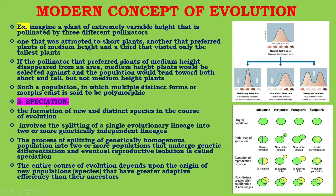The third feature of the modern concept is speciation — the formation of new and distinct species in the course of evolution. Speciation involves the splitting of a single evolutionary lineage into two or more genetically independent lineages. The process of splitting of a genetically homogeneous population into two or more populations that undergo genetic differentiation and eventual reproductive isolation is known as speciation. The entire course of evolution depends upon the origin of new populations or species that have greater adaptive efficiency than their ancestors.